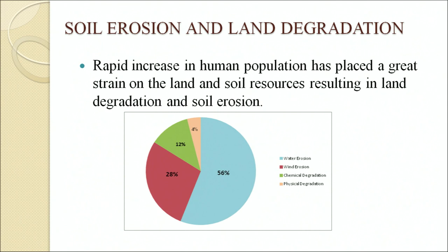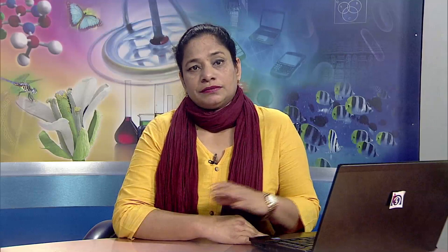A pie chart showing the percentage of worldwide soil degradation: the blue part shows water erosion at 56 percent, red part shows wind erosion at 28 percent, green shows chemical degradation at 12 percent, and yellow shows 4 percent of physical erosion. Soil is the uppermost part of the earth's crust which, when dug or plowed, is the medium in which plants grow.